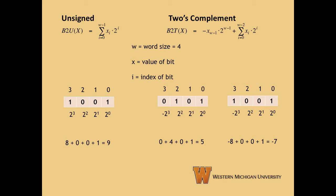Let's take a look at the unsigned example first. At index zero, we take the value of x, which is one, and multiply by 2 to the zero, which gives us one. For the next two bits we have zero values, so those just end up being zeros. For the most significant bit we have a one, so we multiply by 2 to the third and get eight. We sum all that up and end up with a value of nine for this unsigned integer.